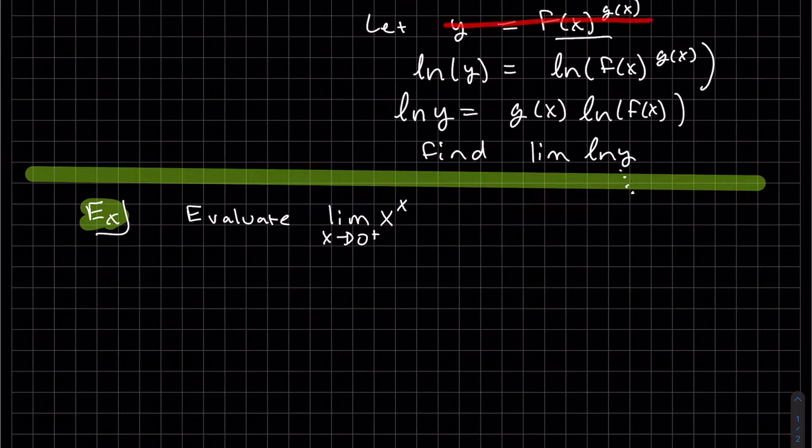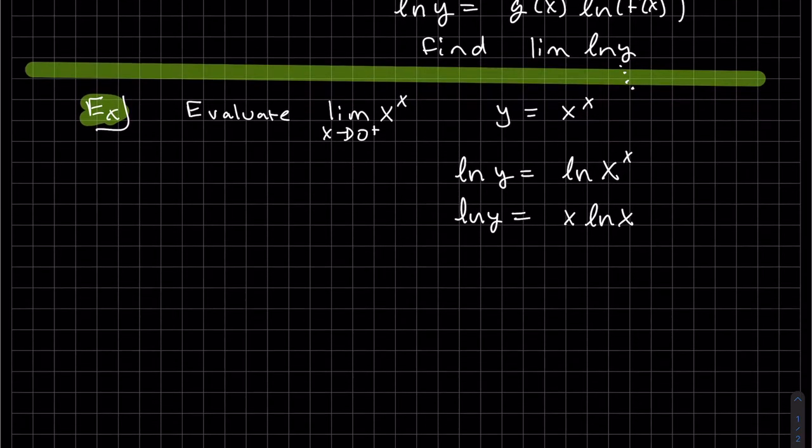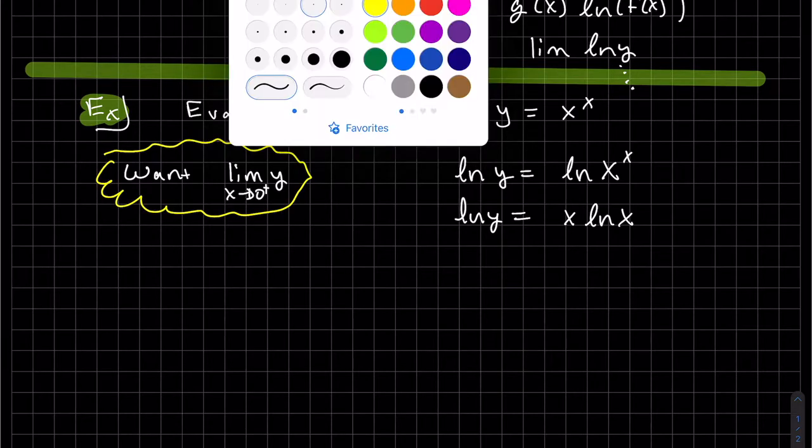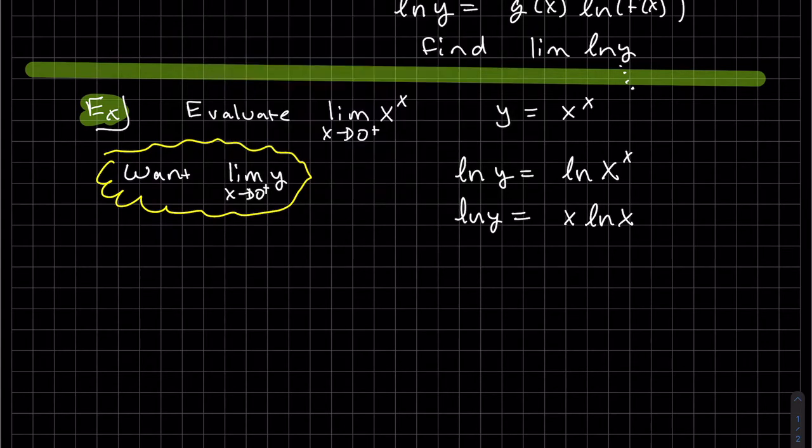We're going to let y equal to those functions, and then take natural log of both sides. Power rule. And remember, x to the x is y. So we want to keep in mind, we want the limit of y as x goes to zero to the right. But we're going to find this limit now.